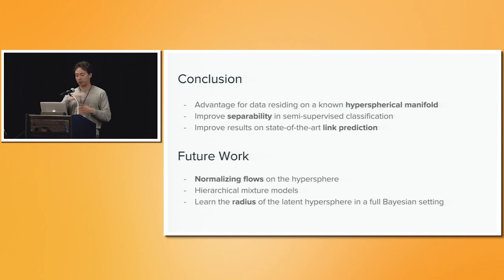Future work, we want to look at normalizing flows, we want to try and combine the nice properties of Gaussians and hyperspheres in hierarchical models, and also try to push away a little bit the surface collapse by learning the radius in a Bayesian setting as well.